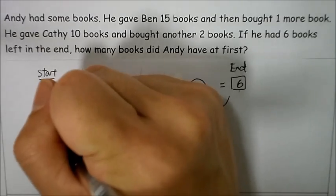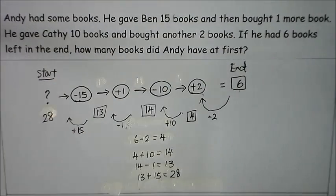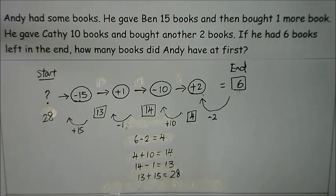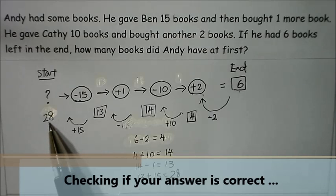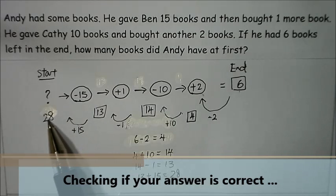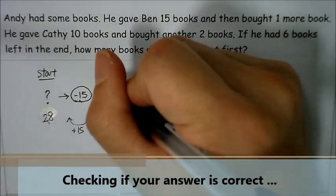So twenty eight written here. So let us take a look at how we can determine whether twenty eight is the answer. So at the start Andy has twenty eight books and he gave Ben fifteen books, so twenty eight subtract fifteen gives me thirteen.